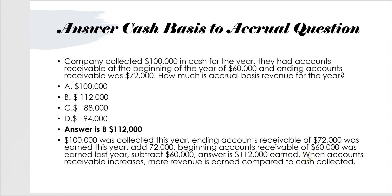Make a flashcard on this: when accounts receivable increases, more revenue was earned compared to cash collected. Accounts receivable went up from $60,000 to $72,000, and as a result what you earned is $12,000 more than what you collected. When reconciling revenue from cash basis to accrual basis: start with what was collected, add the ending receivable balance because it was earned this year and will be collected next year, then subtract the beginning receivable balance because it was earned last year. That gives you $112,000.